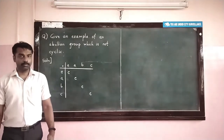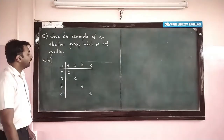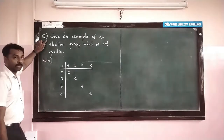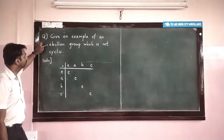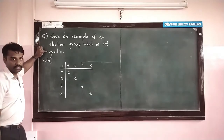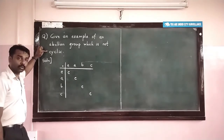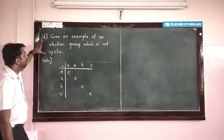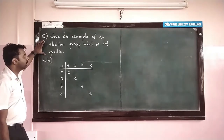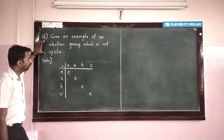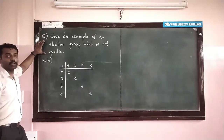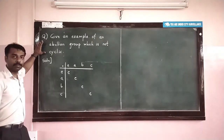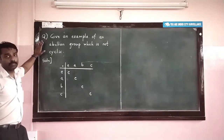Let us go for the next problem. We want to give an example of an abelian group which is not cyclic. We know that every cyclic group is abelian, so we need to find an example of an abelian group which is not cyclic, because the converse of this theorem is not true.